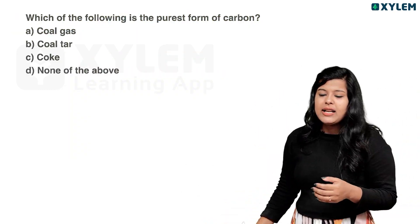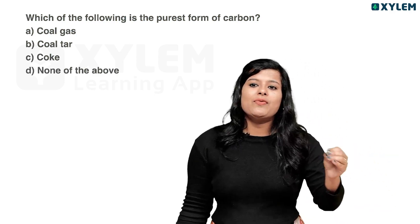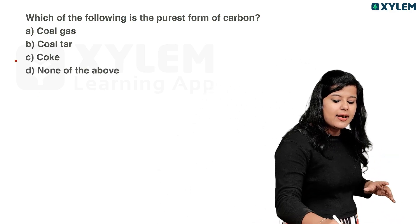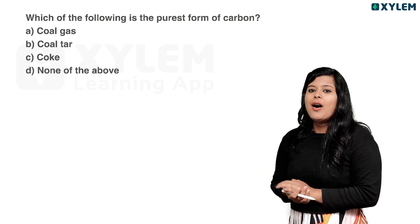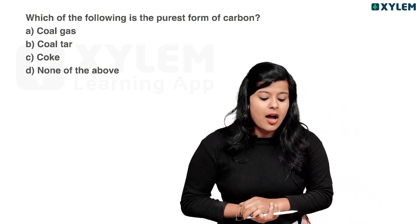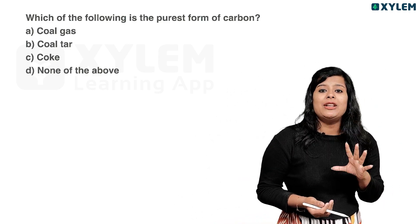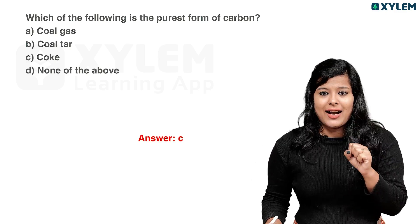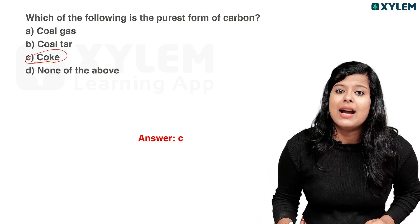Which of the following is the purest form of carbon? Coal gas, coal tar, coke, or none of the above? The purest form of carbon is coke. That is coke — because there is no water. Coke is option C.